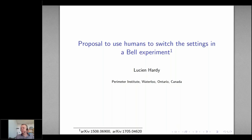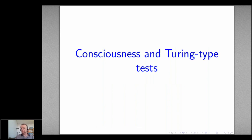This is a proposal to use humans to switch the settings in a Bell experiment. Before getting to the actual proposal, I'll give the background. Much of this may be very familiar, but it's worth going over the basic philosophical issues of consciousness, just so we know what kind of thing is being tested. I'll also talk about Turing-type tests, which are a slightly broader category than the Turing tests that Alan Turing came up with.